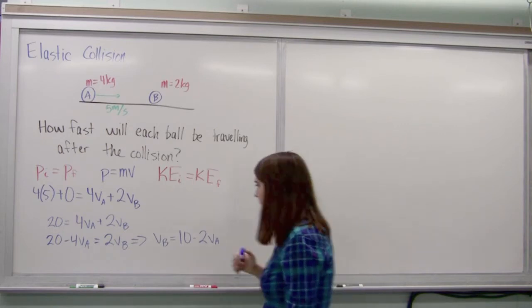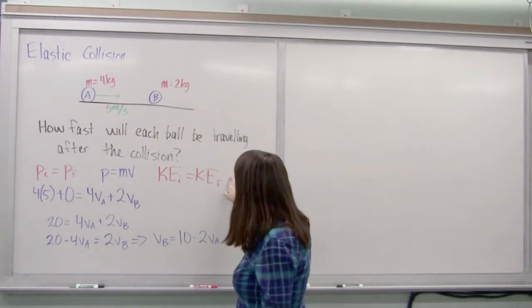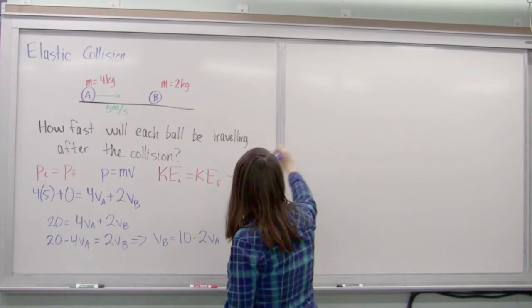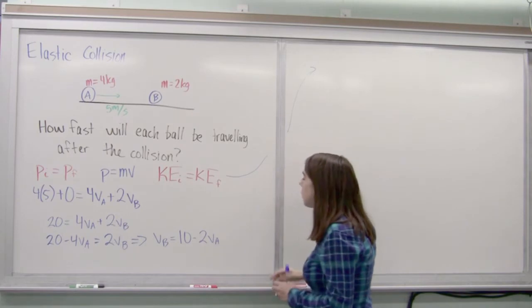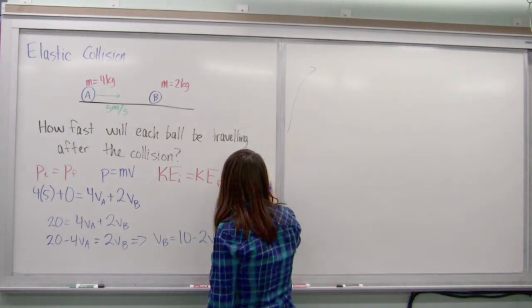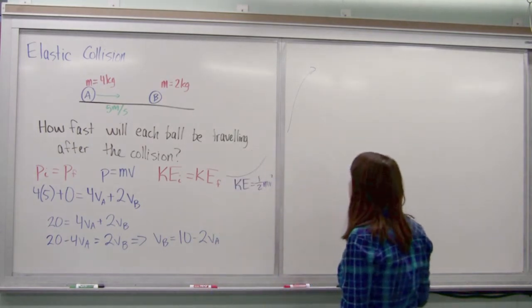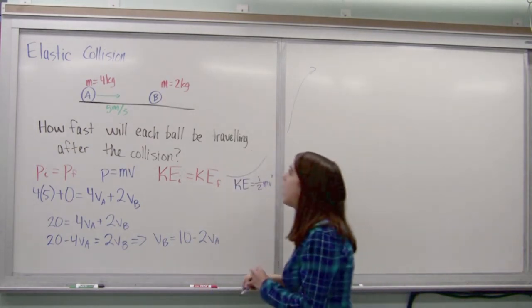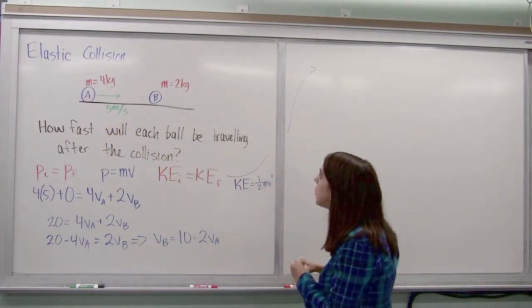So we've kind of got VB, but it's in terms of other numbers that we don't know. So let's go ahead and work with our kinetic energy conservation equation. And remember that kinetic energy is 1 half mv squared. So I'll have 1 half times the mass of this one times the velocity of this one. This is for initials. So initially,